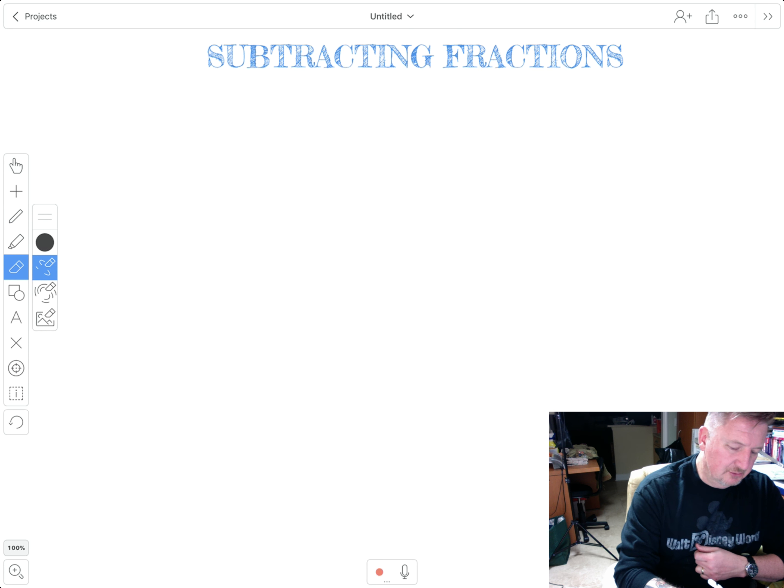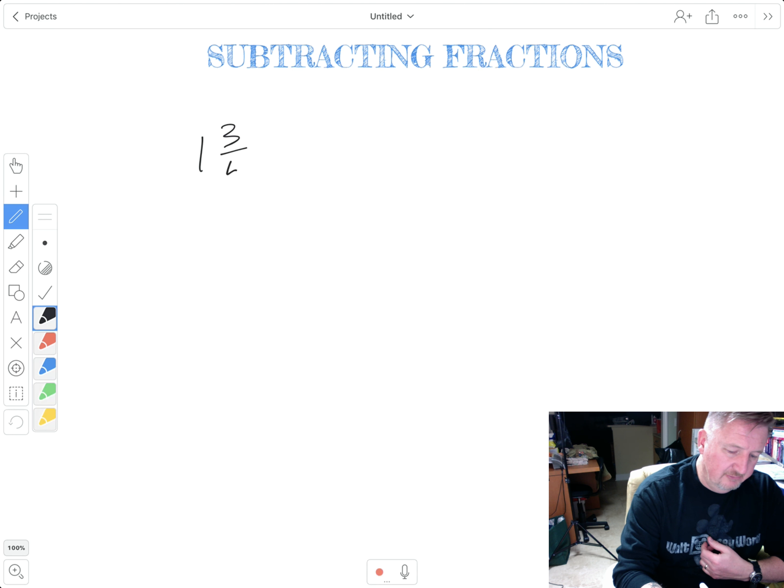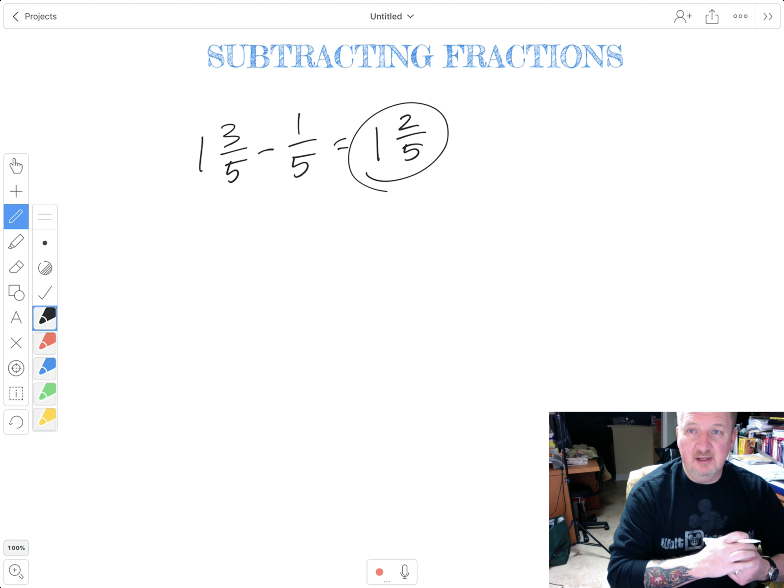Just go back and rewatch this if necessary. Same thing with a mixed number. Let's see. One and three fifths minus one fifth. I don't have to, since I can actually subtract the one from the three, I really don't have to do anything else. I can leave the one as it is. And then three minus one is two fifths. And then that would be my final answer.